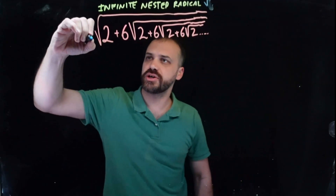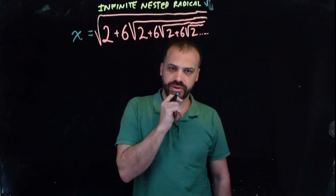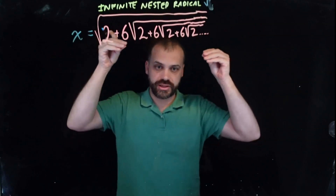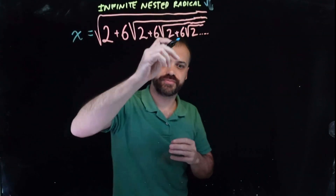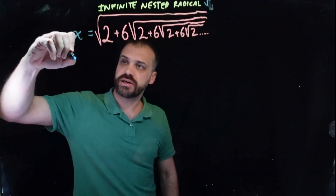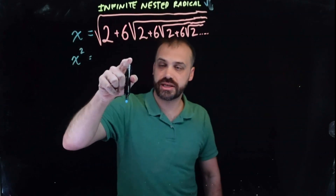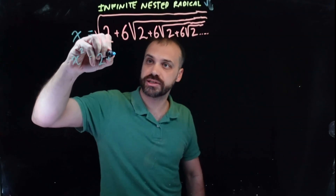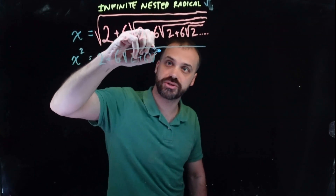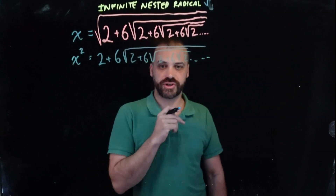Let's start solving it. Let's just say it's equal to x. If we work from the outside in, the first thing is this square root, and we can undo a square root by squaring both sides. So x squared equals 2 plus 6 times the square root of 2 plus 6 times the square root of 2 plus 6 times the square root of 2, forever and ever and ever.